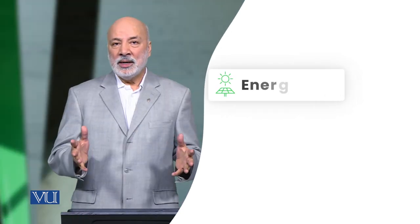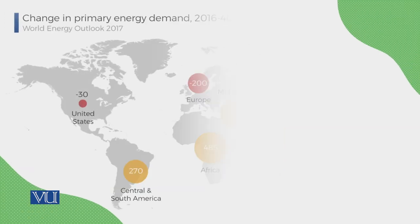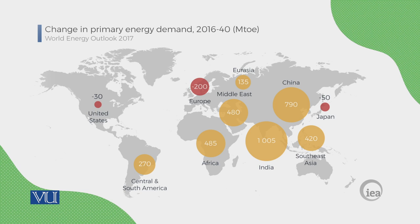If you look at the earth's economies — the big economies — as it is shown in the slide, Europe and the United States going forward: this is a plot that shows from 2016 to 2040, measured in millions of tons of oil equivalent. Sometimes it's coal equivalent, sometimes oil equivalent. But look only at the comparative numbers, not the actual numbers.